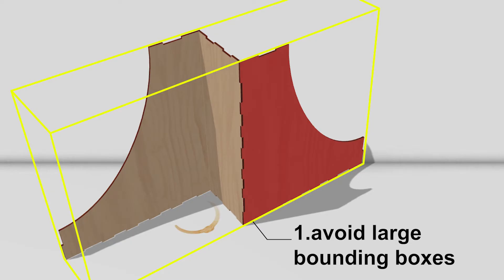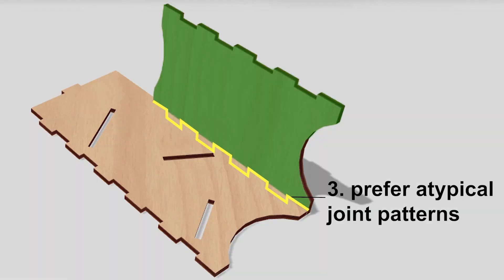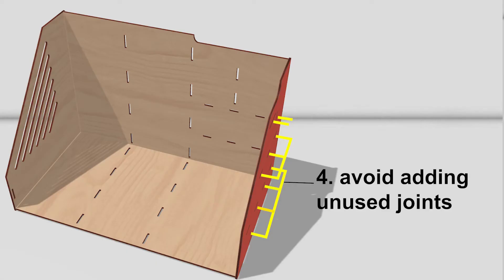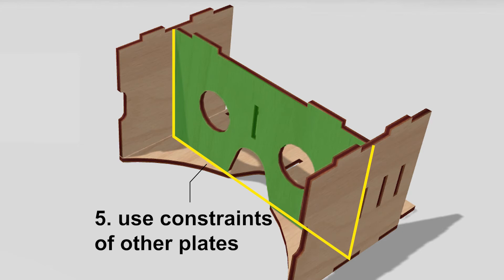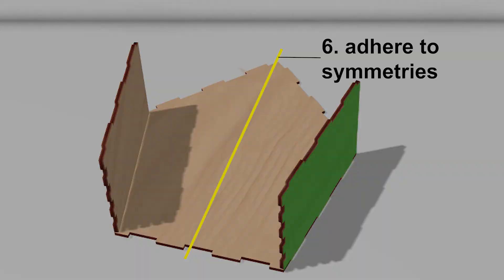AutoAssembler achieves this by beam searching the space of possible 3D reconstructions, while giving preference to models based on 6 heuristics that score each combination of plates.